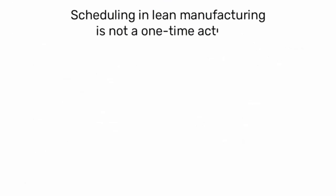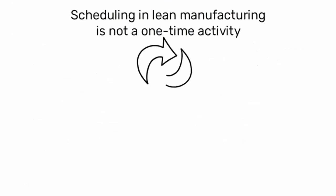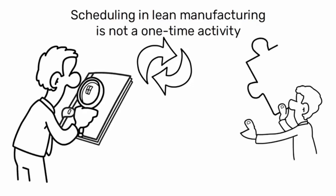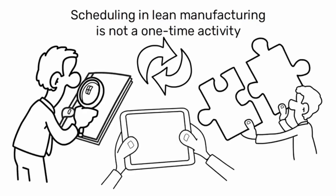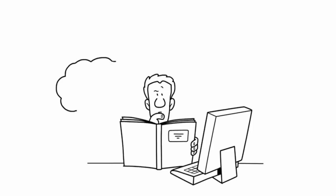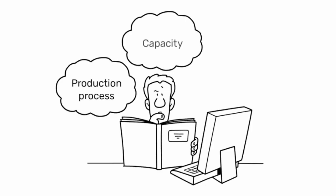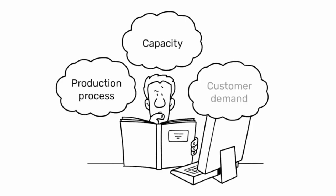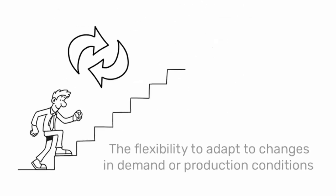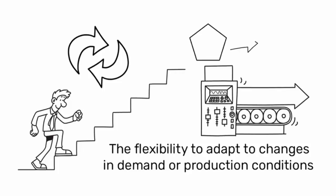Moreover, scheduling in lean manufacturing is not a one-time activity, but a continuous process of monitoring, adjusting, and improving. It requires a deep understanding of the production process, capacity, and customer demand. It also necessitates a commitment to continuous improvement and the flexibility to adapt to changes in demand or production conditions.